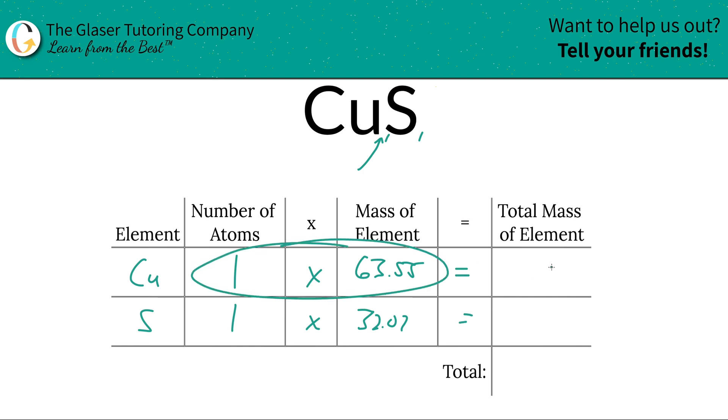And then we're simply going to multiply this row across to find the total mass of that particular element. So the total mass of copper here is simply going to be 63.55 units of mass, and then sulfur is going to be 32.07.